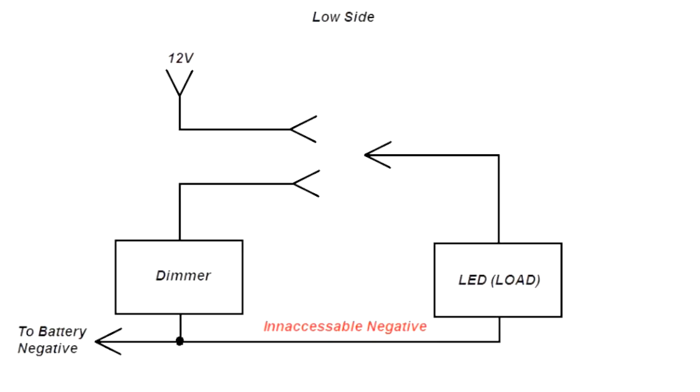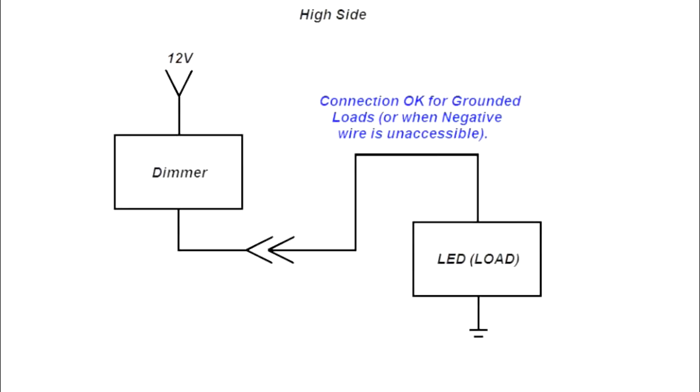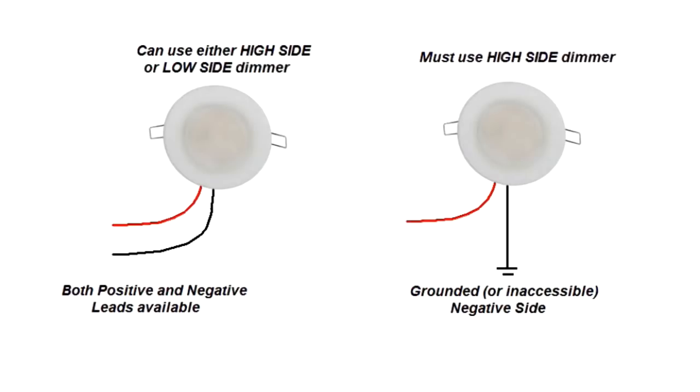And the same situation exists if the negative side of the LED is inaccessible. For example, let's say the LED's negative side goes back to the DC distribution panel from a different route. So if the LED is grounded or the negative side is inaccessible, the only option is to use a high side dimmer because the high side dimmer goes between 12 volts and the LED. If both positive and negative leads are available for your LED, you can use actually either a high side or a low side dimmer, it doesn't matter. If your LED is grounded or inaccessible negative, you must use a high side dimmer. However, high side dimmers are sometimes more expensive, which is why you do see some low side dimmers on the market.